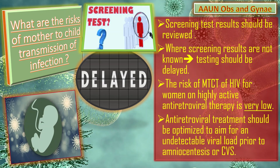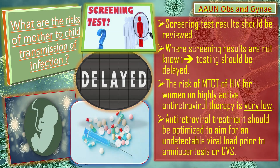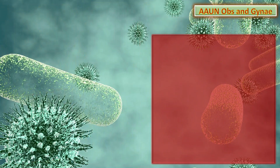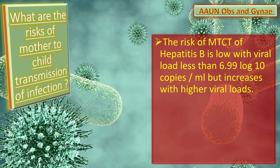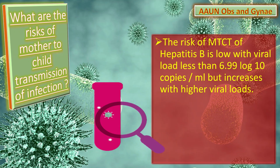The risk of mother-to-child transmission of HIV for women on highly active antiretroviral therapy is very low. Antiretroviral treatment should be optimized to aim for an undetectable viral load prior to amniocentesis or chorionic villus sampling. The risk of mother-to-child transmission of hepatitis B is very low with a viral load of less than 6.99 log10 copies per ml, but increases with higher viral load.